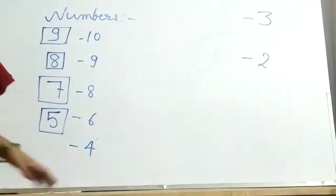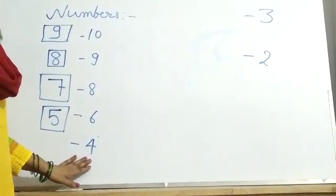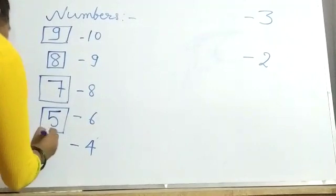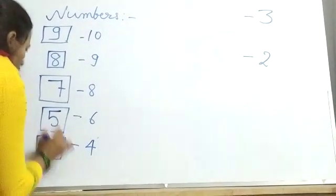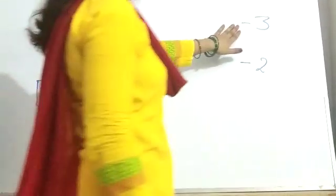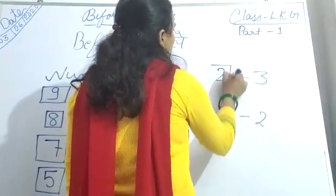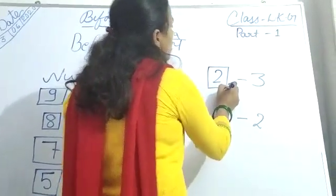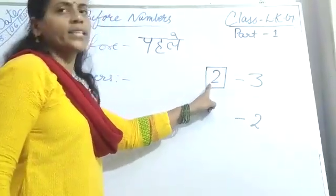Next. What comes before 4? 4 se pehle kya aata hai? 3. Next. What comes before 3? 3 se pehle kya aata hai? 2. What comes before 3? 3 se pehle 2 aata hai. Okay.